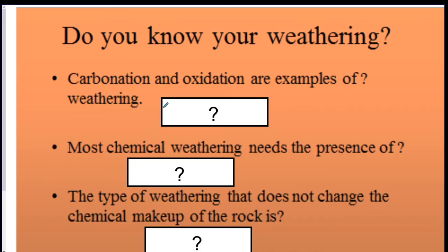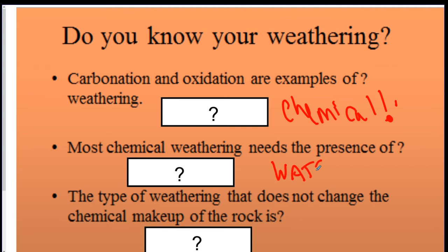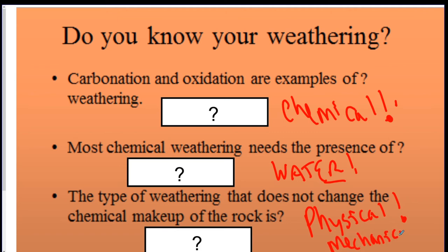Here are three review questions. First: carbonation and oxidation are examples of what type of weathering? The answer is chemical. Second: most chemical weathering needs the presence of water. Third: the type of weathering that does not change the chemical makeup of the rock is physical. Another word for physical you might see is mechanical weathering — it's the same thing.